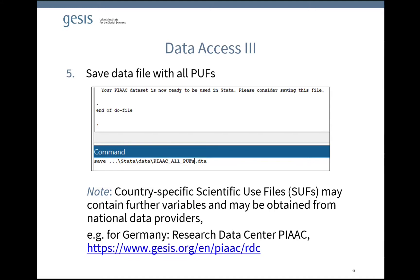Note that this procedure will just provide you with the public use files of PIAC, which are freely available on the OECD website. As there may be updates on the datasets, it is worth checking the OECD website from time to time. Country-specific scientific use files may contain further details, for example on age, education, and income, which could not be published in the public use files for reasons of data protection.